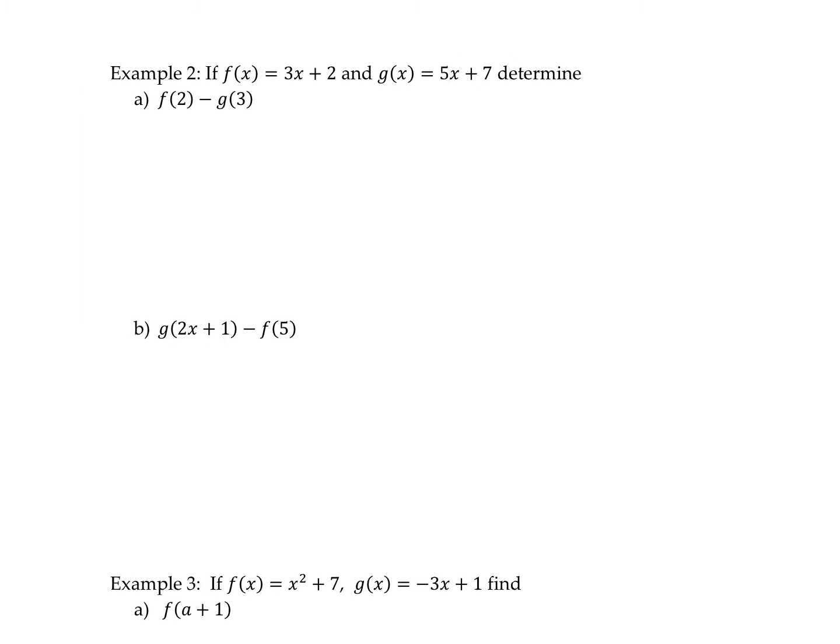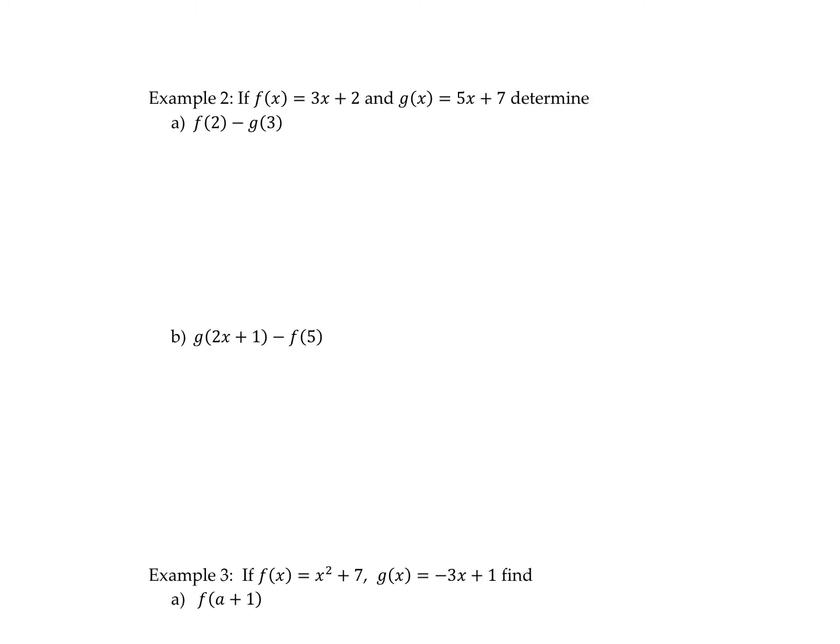In this example we have two functions. f of x is 3x plus 2 and g of x is 5x plus 7. It wants us to determine f of 2 minus g of 3. So f of 2 would be 3x plus 2 where we're substituting in a value of 2. Then it wants me to subtract g of 3. So g is 5x plus 7, and it wants me to substitute in a value of 3 in this function. Notice I put both functions in brackets, especially because I'm subtracting. So 3 times 2 is 6 plus 2 is 8. 5 times 3 is 15 plus 7 is 22. And then 8 minus 22 is negative 14.